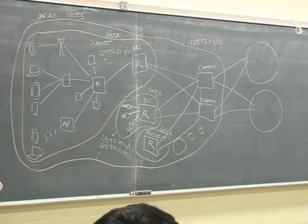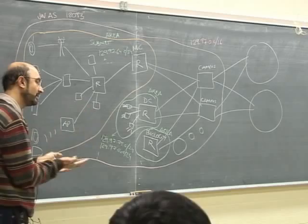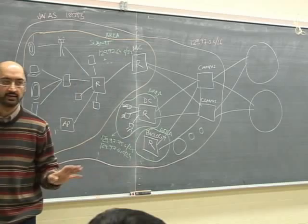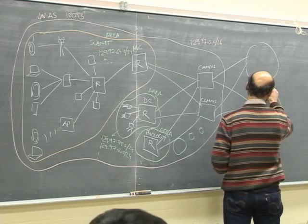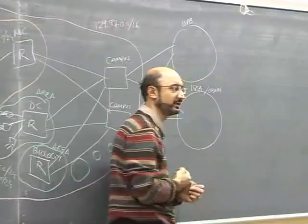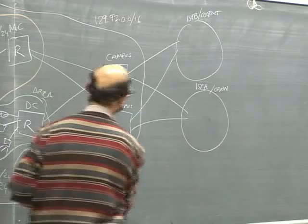Moving up the hierarchy, we have ISPs. UW is connected to two ISPs — Orion and Cogent or Hydro-1. Those are the two providers that provide service to Waterloo. Looking at the AS browser, you'll note that these ISPs are connected to other ISPs, which have connections to yet other networks, and so on.